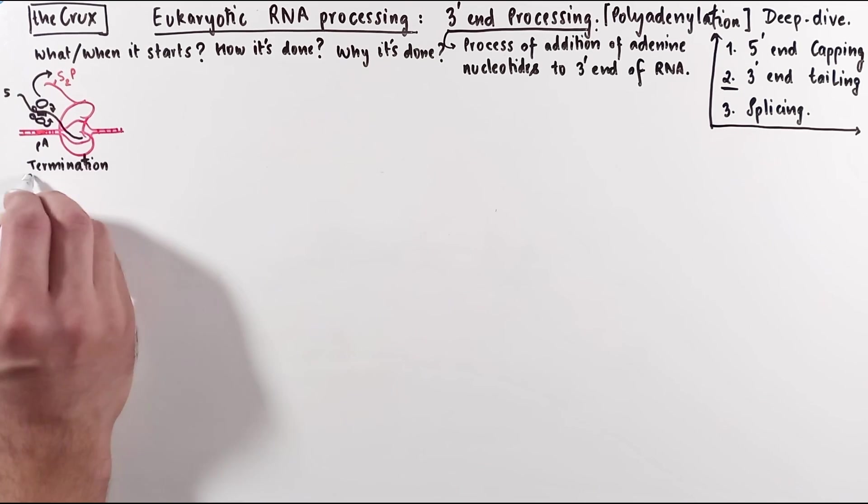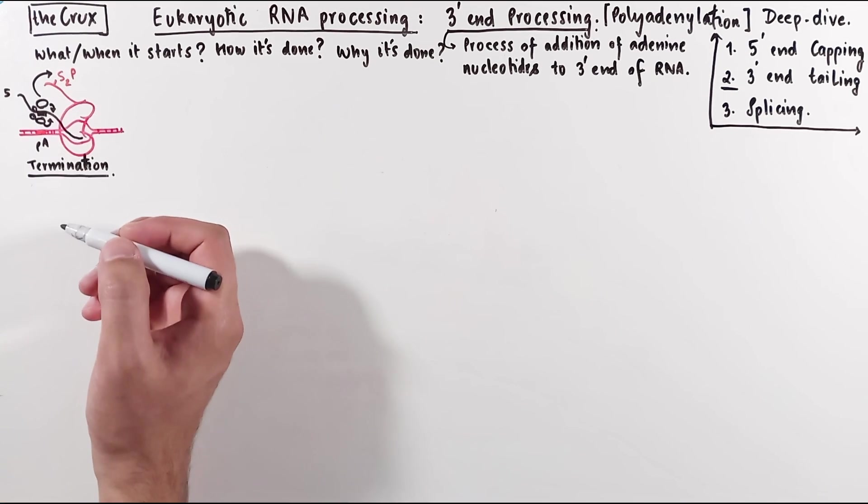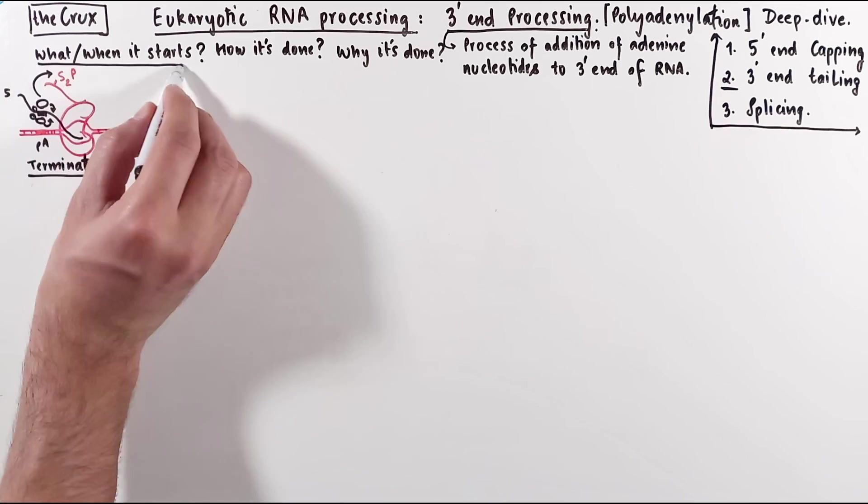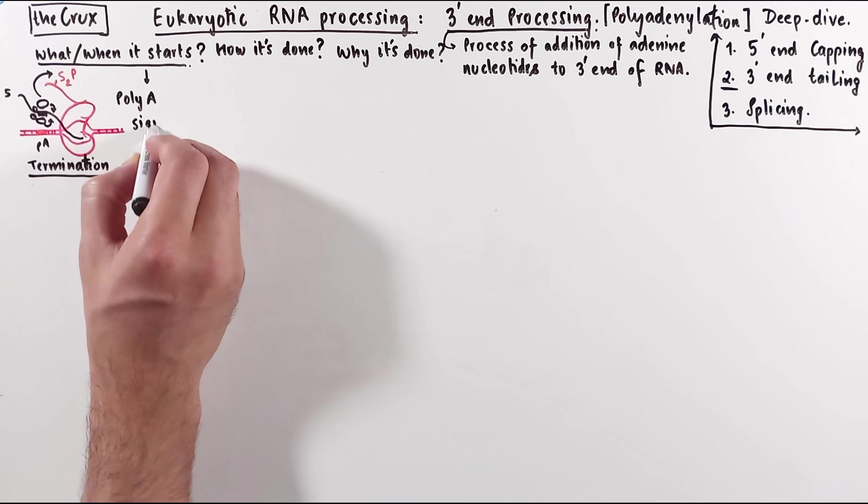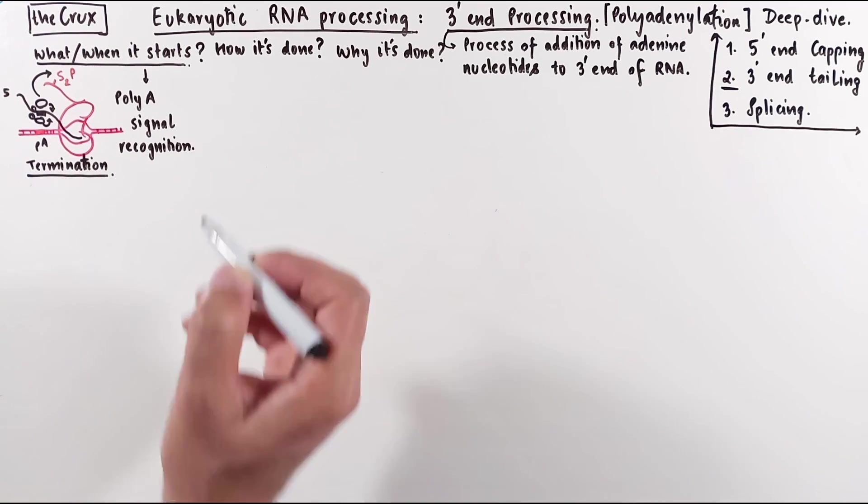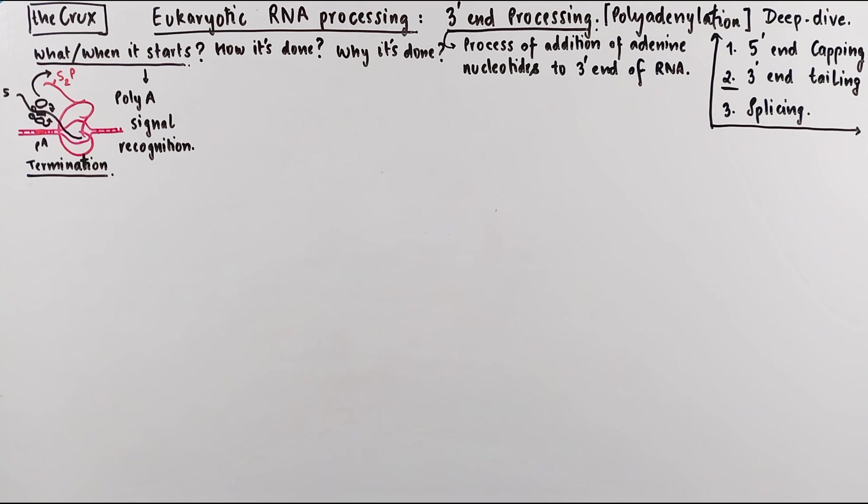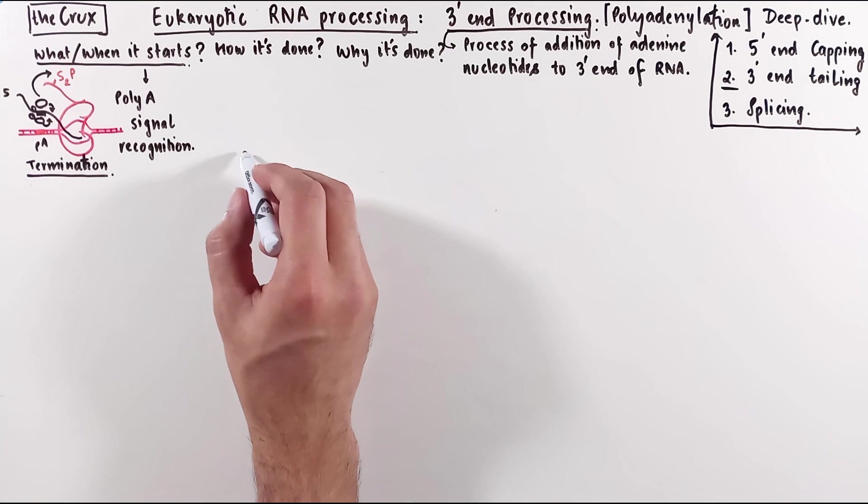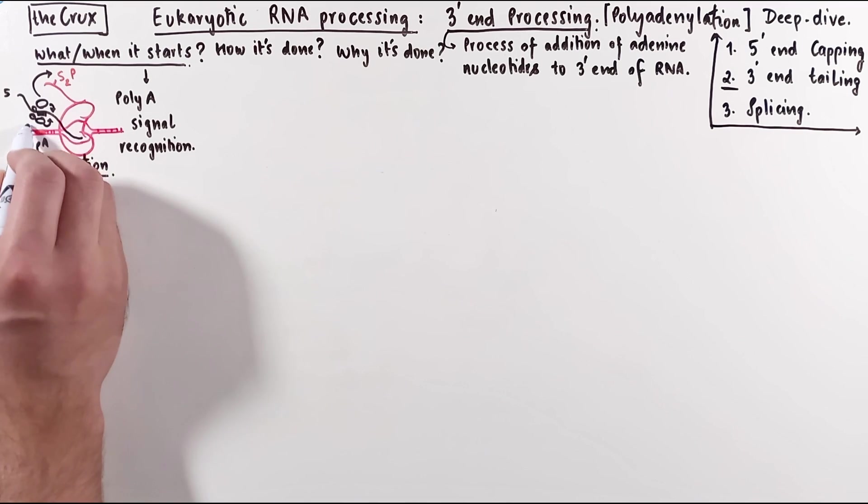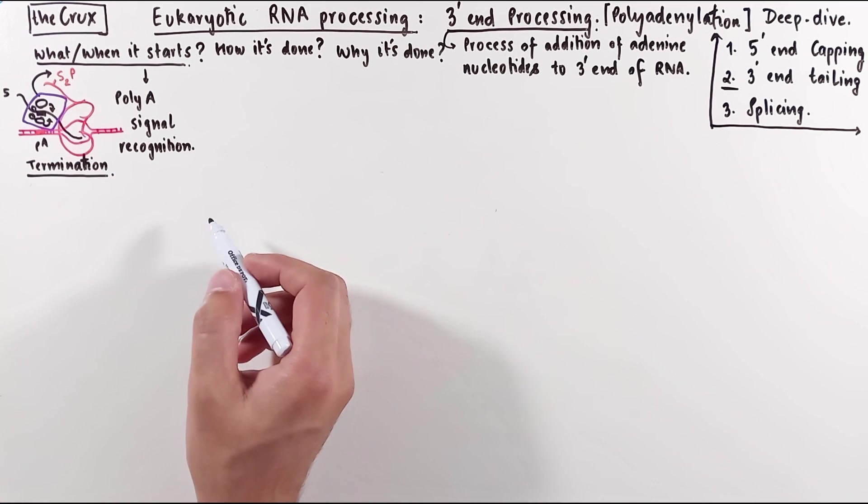To answer the question of when specifically this modification process starts, it is when the polyA signal is recognized and cleavage proteins have bound. This is what we talked about in the transcription termination video. But now I will add some specific details into this cleavage complex that is formed at the polyA signal. So let's zoom into this portion of the RNA.